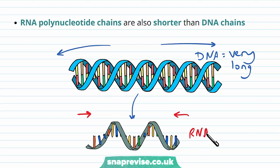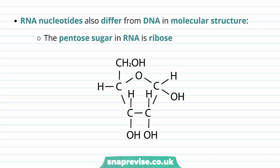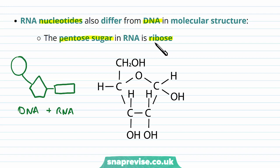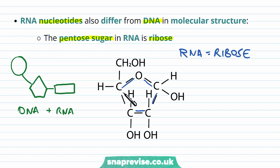Looking in more detail at the RNA nucleotides, these differ slightly from DNA. The main factor to remember is that the nucleotides in all types of polynucleotide generally follow the same format — we have a phosphate group joined to a pentose sugar, which has the shape of a pentagon, and then an organic base attached to that as well. But what differs is some of the details within the nucleotide itself. The pentose sugar found in RNA is actually ribose, whereas in DNA it was known as deoxyribose. In RNA, it's simply called ribose.